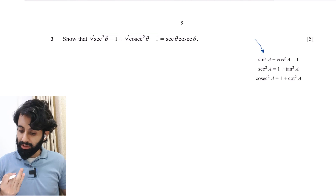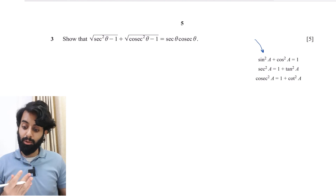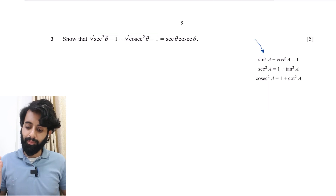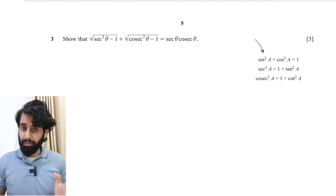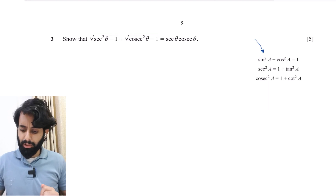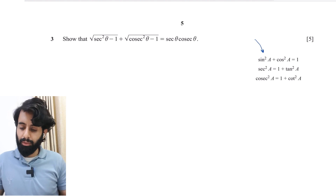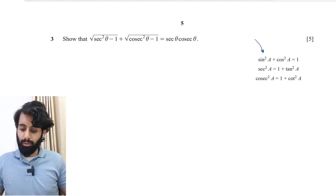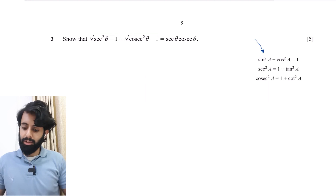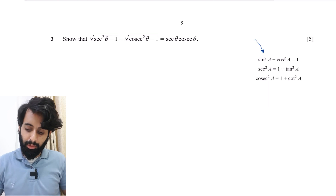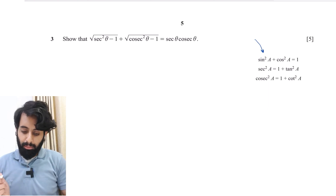We have sec, cosec, sec, and cosec in this expression. My recommendation whenever doing trigonometric identities is to bring everything in terms of sine, cosine, and tangent first, and then convert back into sec, cosec, or whatever the question requires at the end.